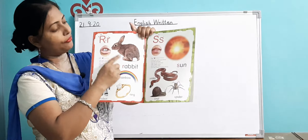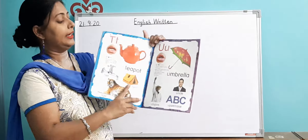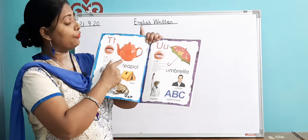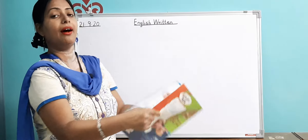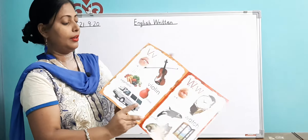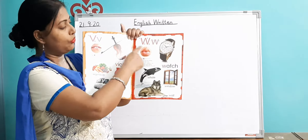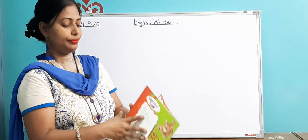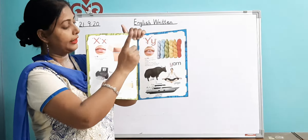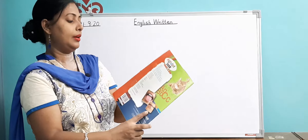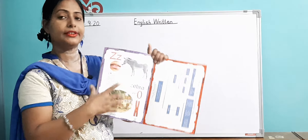R for rabbit, S for sun, T for turtle, T for teapot, T for tree, U for umbrella, V for violin, V for vase, V for van, W for watch, X for x-ray, Y for yellow, Z for zebra.